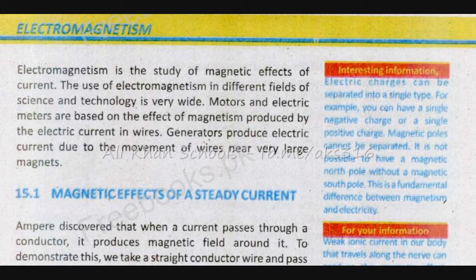Generators produce electric current due to the movement of wires near very large magnets.